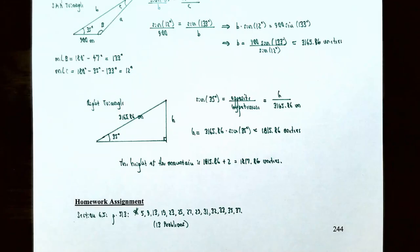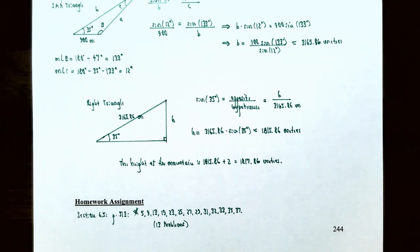This finishes our video on the ambiguous case for the law of sines. We talked about how to use the law of sines to solve oblique triangles, how to solve applied problems using the law of sines, and the ambiguous case. If you have any questions about the examples or the homework for this section, please let me know. I'll see you in the next video when we talk about the law of cosines.